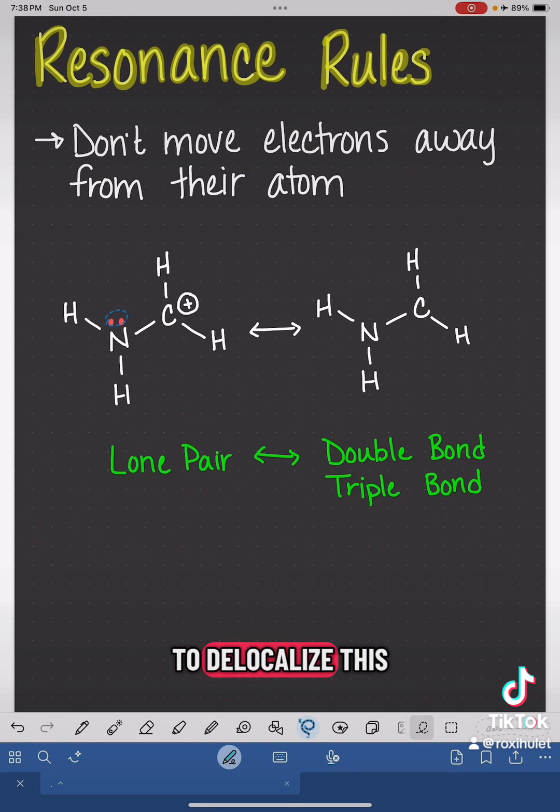For example, if I wanted to delocalize this lone pair of electrons on the nitrogen, they need to stay associated with the nitrogen atom. They can't jump all the way over to the carbon.